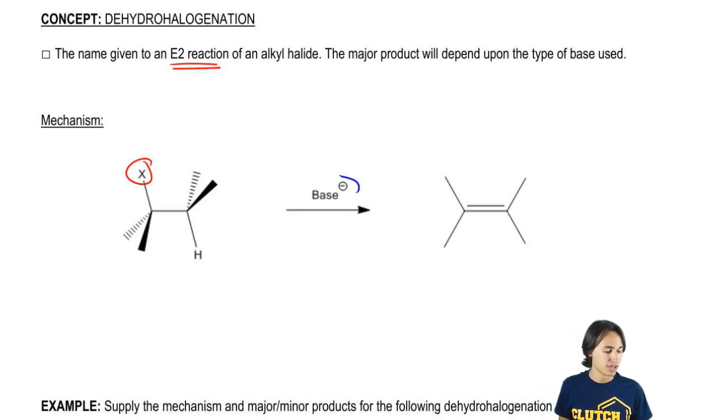Now notice here I'm just using the word base in general, but remember the type of base could lead to a different type of product because we had Zaitsev and we had Hoffman and the type of base that you use could prefer one product over another. But let's just go ahead and just draw the general E2 elimination product right now. I would take my base and where would those arrows go to, do you remember?